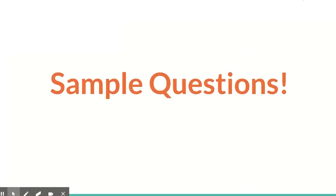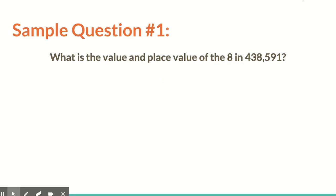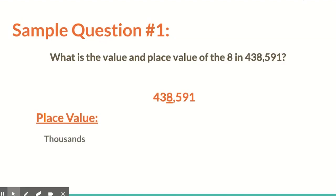So now we're going to look at some sample questions. On the HESI A2, you're going to have to use place value understanding to set up all types of problems. Let's look at our first sample question: what is the value and place value of the 8 in 438,591? Let's rewrite this number and underline the place value we're paying attention to. That 8 is located in the thousands place, and if we have 8 thousands, the value is 8,000.